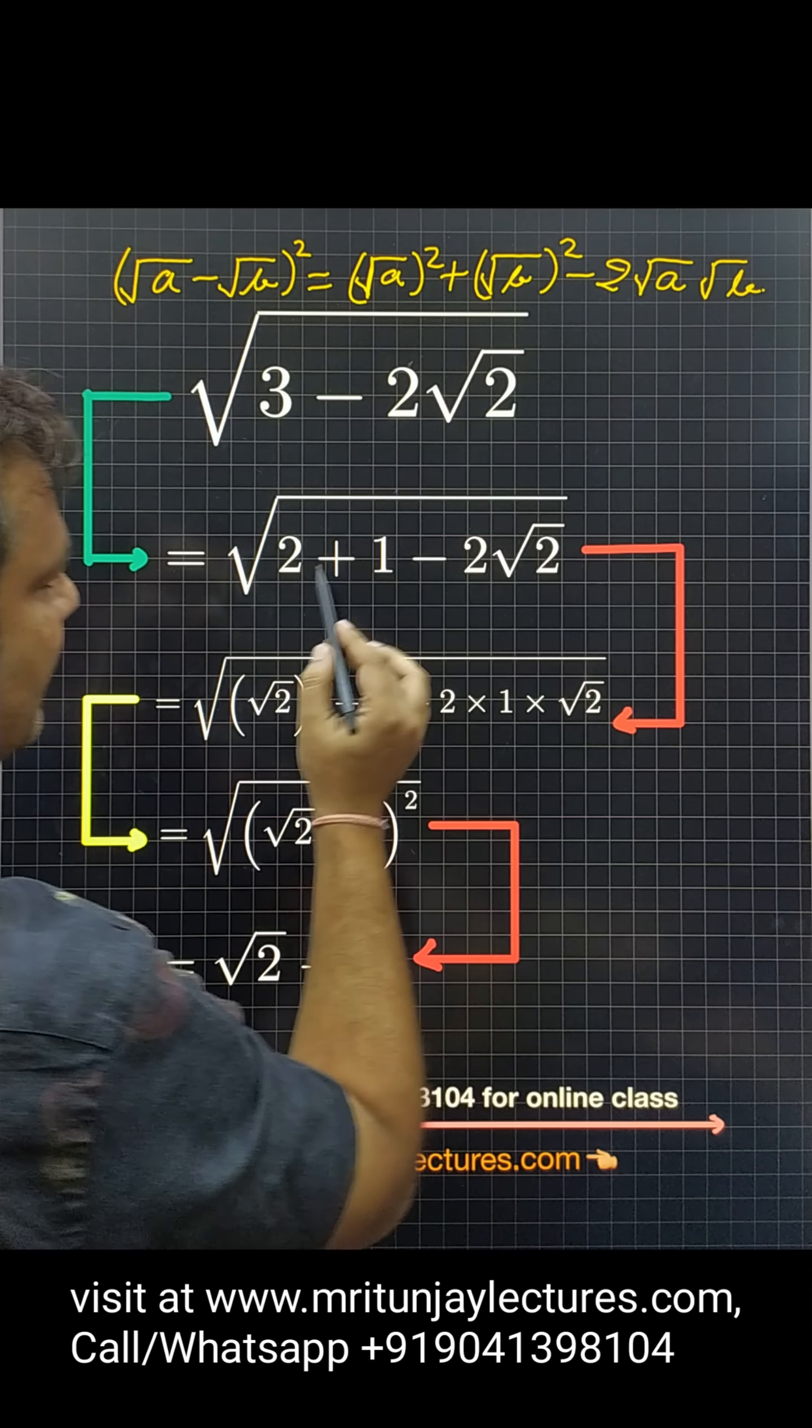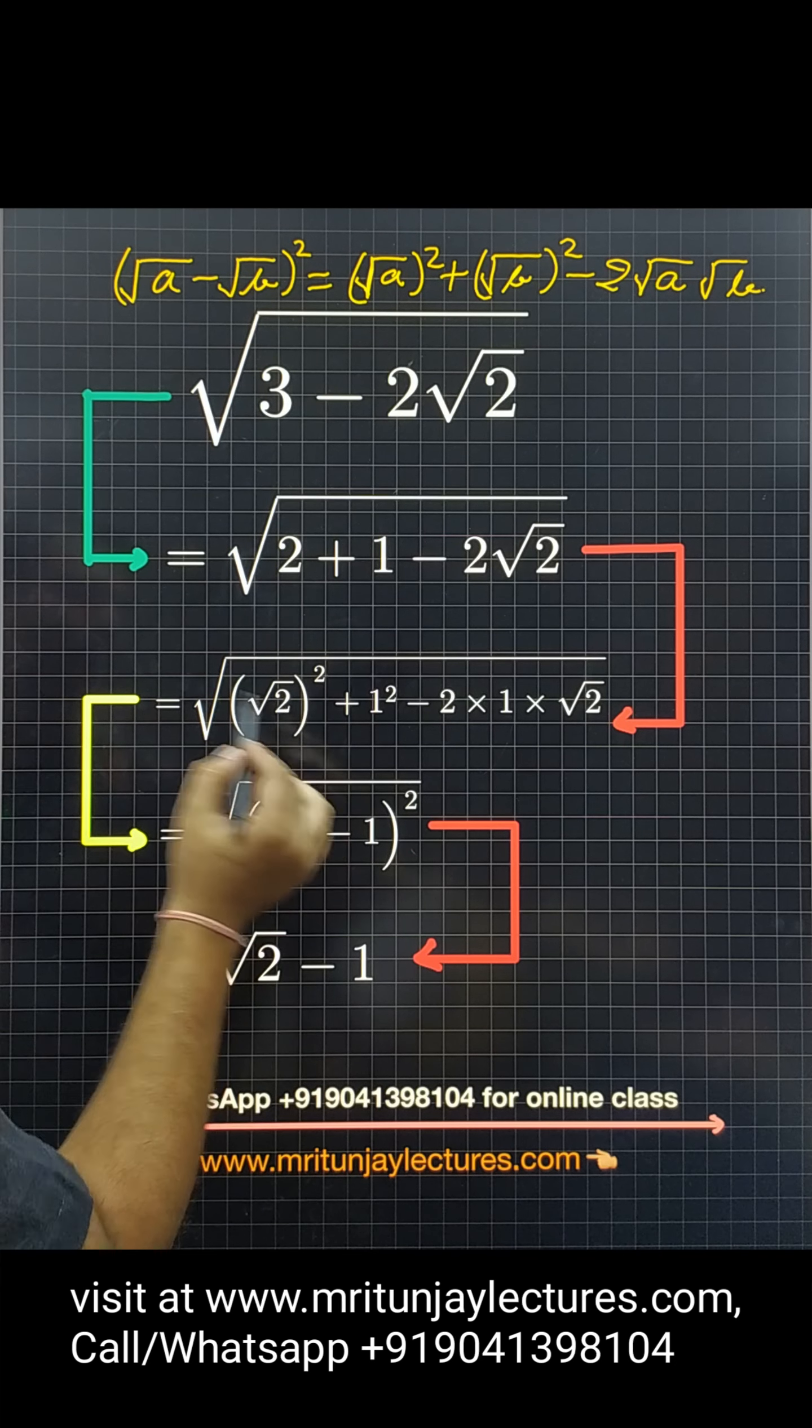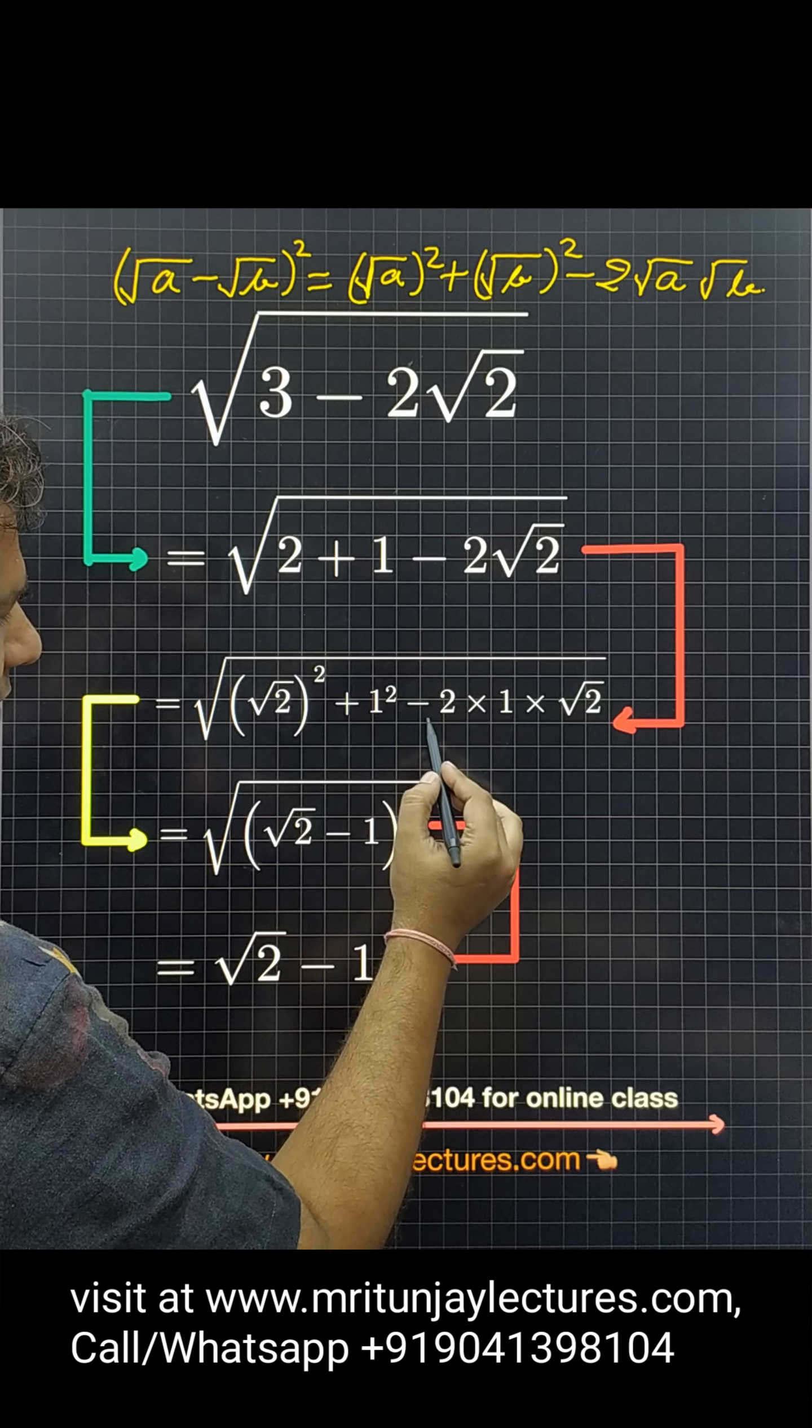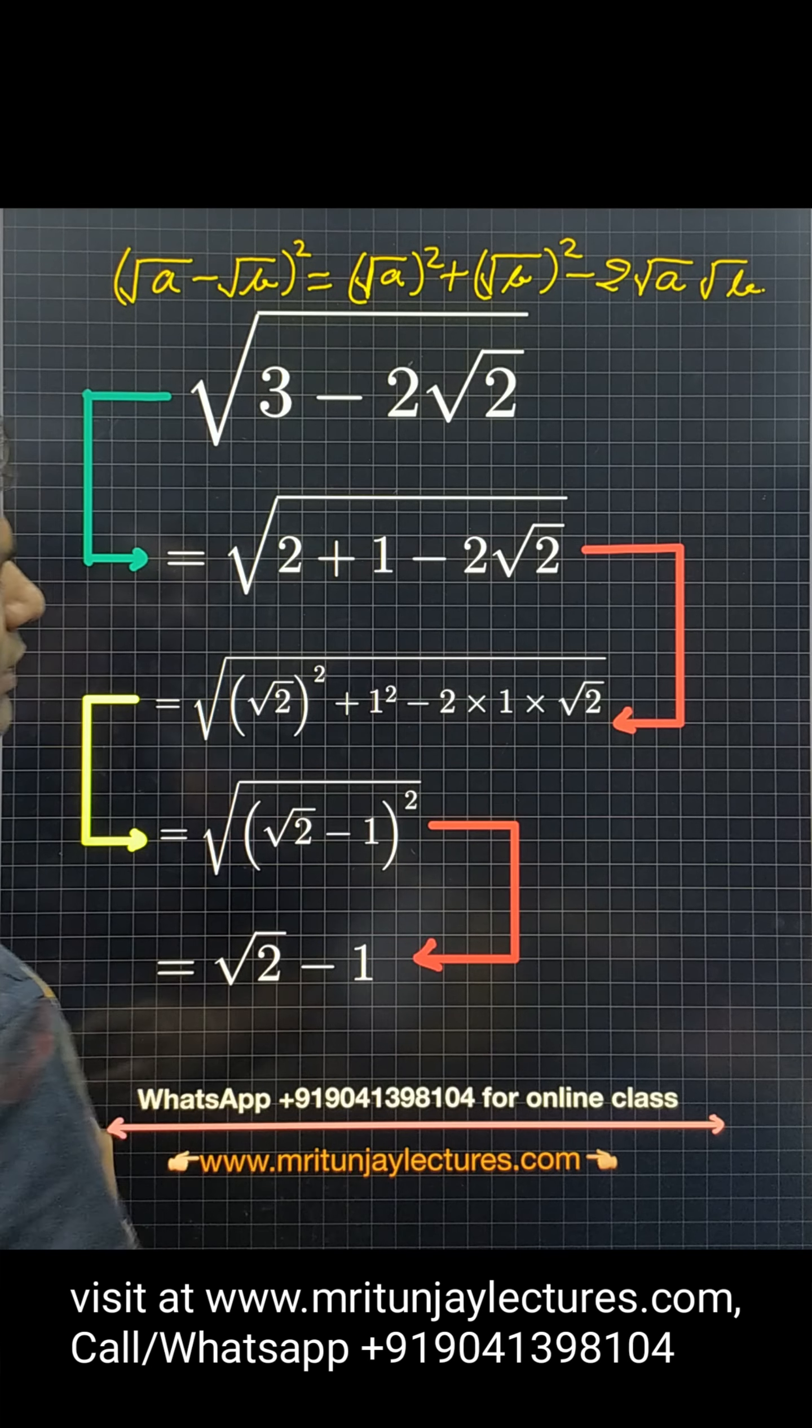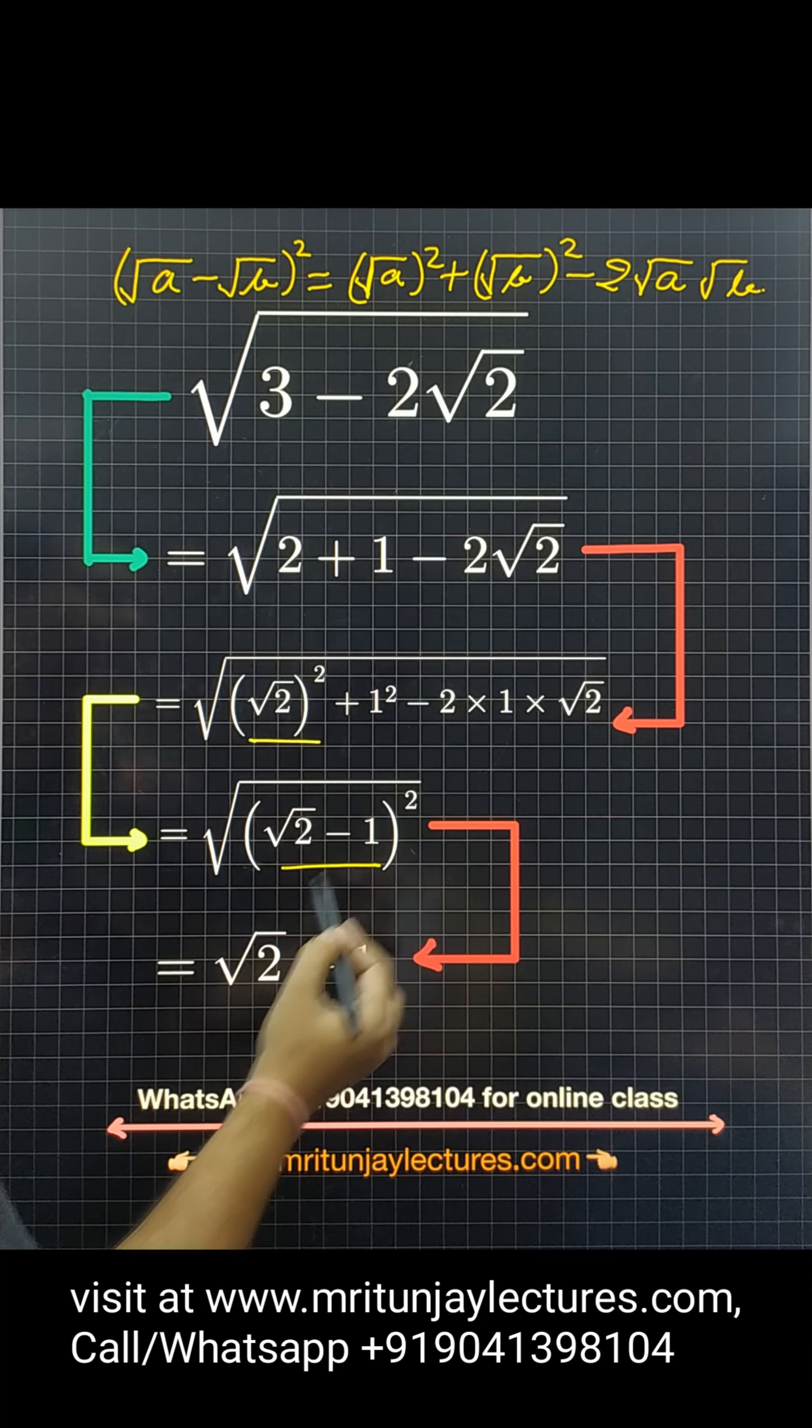So, what about A? A is basically √2. This one written (√2)². This one written 1². This one written minus 2 into 1 into √2. So, basically (√2 - 1)².